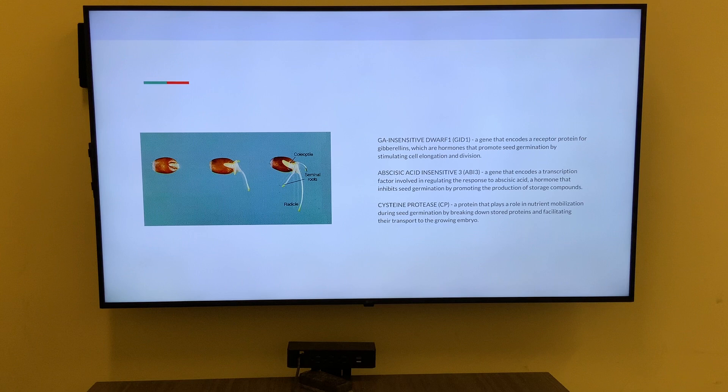At the molecular level, seed germination is regulated by gene expression and protein synthesis. Many genes and proteins are involved in regulating different aspects of the germination process, such as nutrient mobilization, hormone signaling, and cell differentiation. Recent studies have identified key genes and proteins involved in seed germination, such as those involved in cell wall metabolism and hormone signaling. Advances in molecular biology have allowed us to better understand the molecular mechanisms that control seed germination. Overall, the mechanistic understanding of seed germination is still evolving, but recent advances in our understanding of the molecular and genetic mechanisms underlying seed germination hold great promise for improving agriculture and biotechnologies.